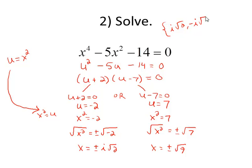Solution set: i root 2, negative i square root of 2, square root of 7, and negative square root of 7.